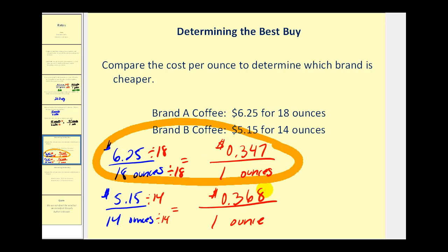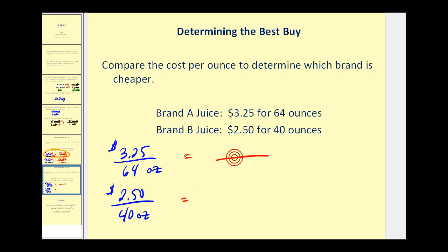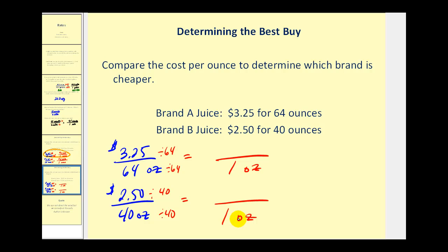Let's look at another example. Here we're comparing two brands of juice, where brand A is $3.25 for 64 ounces and brand B is $2.50 for 40 ounces. Again, our unit rate would be the cost per ounce. On the first rate we divide by 64, and on the second rate we divide by 40, to make our denominators equal to one ounce.